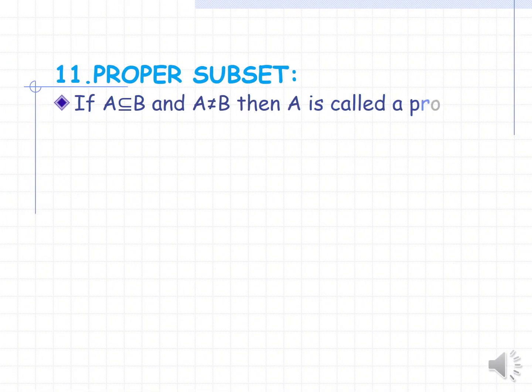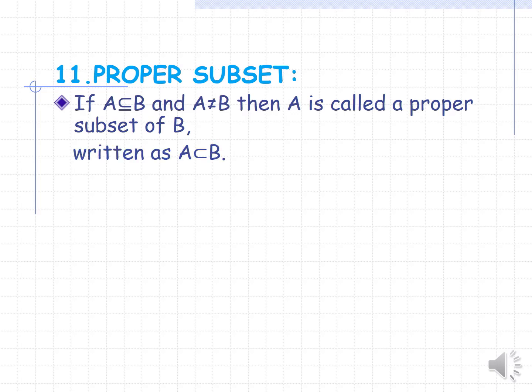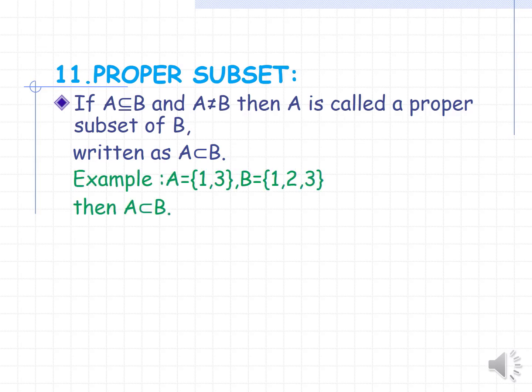Proper subset. If A is a subset of B and A is not equal to B, then A is called a proper subset of B, which is written as A is a proper subset of B. For example, if A = {1, 3} and B = {1, 2, 3}, all elements of A are in B, but not all elements of B are in A. Therefore A is called the proper subset of B.